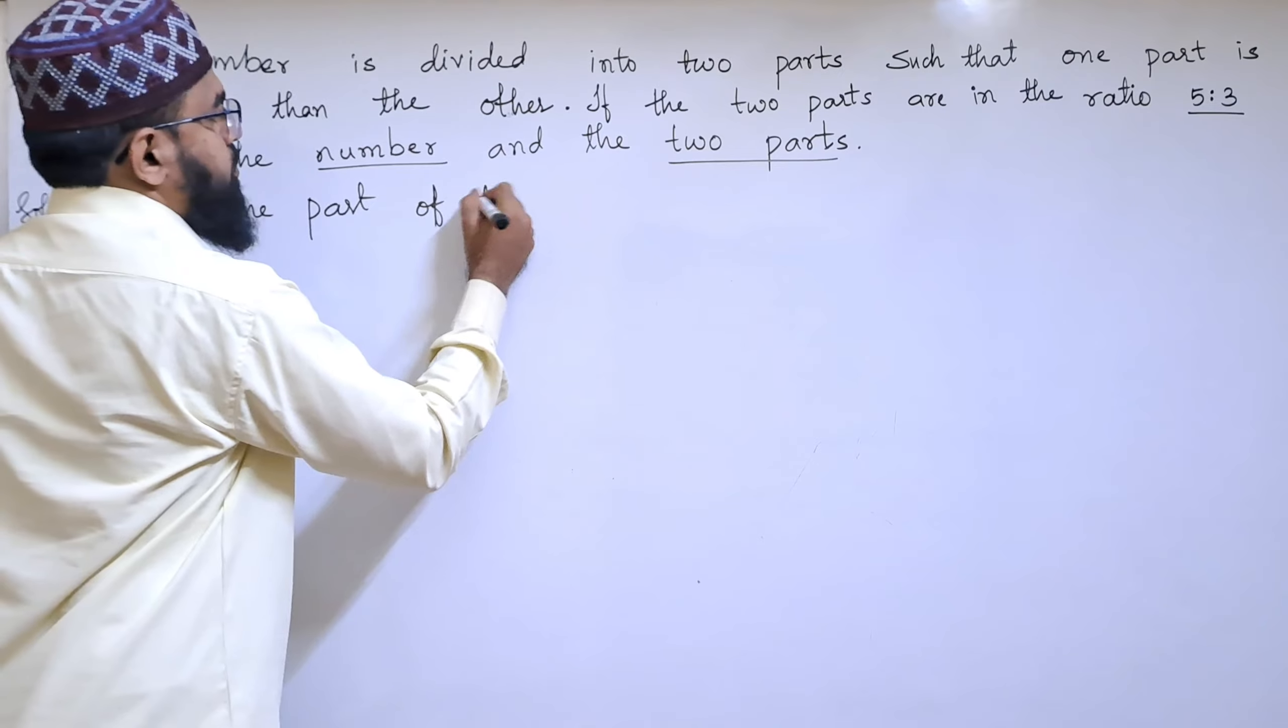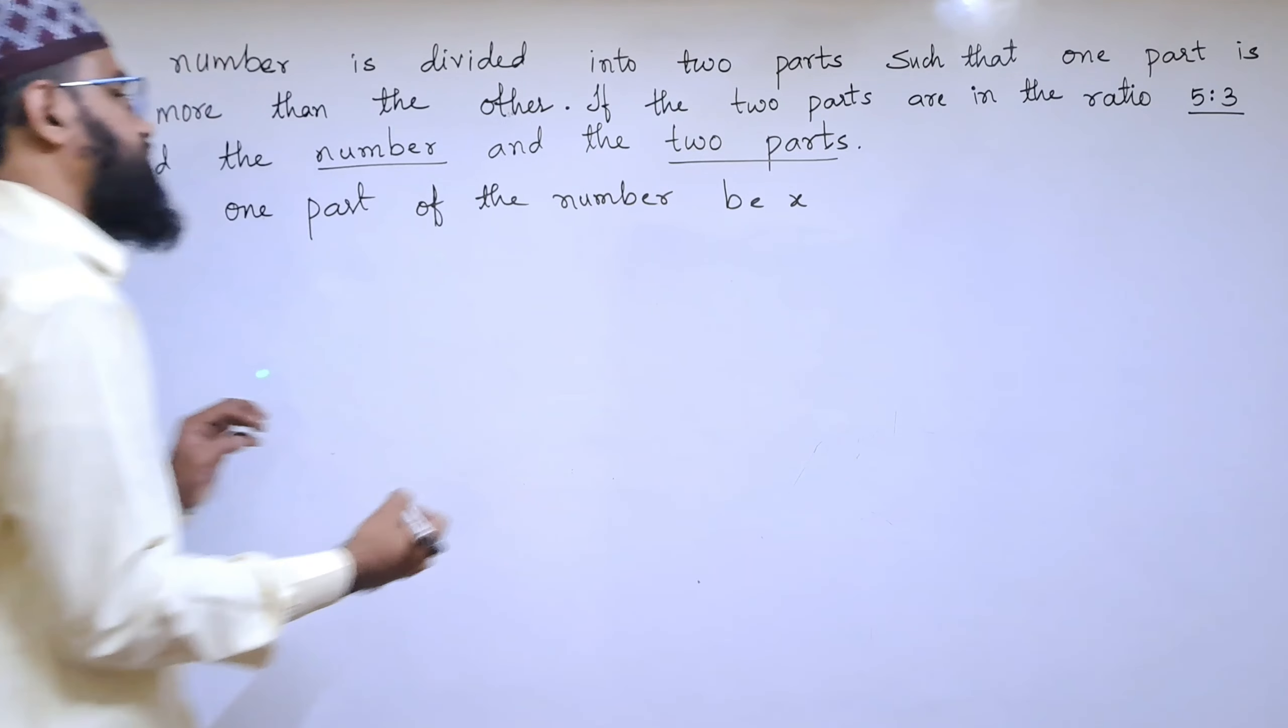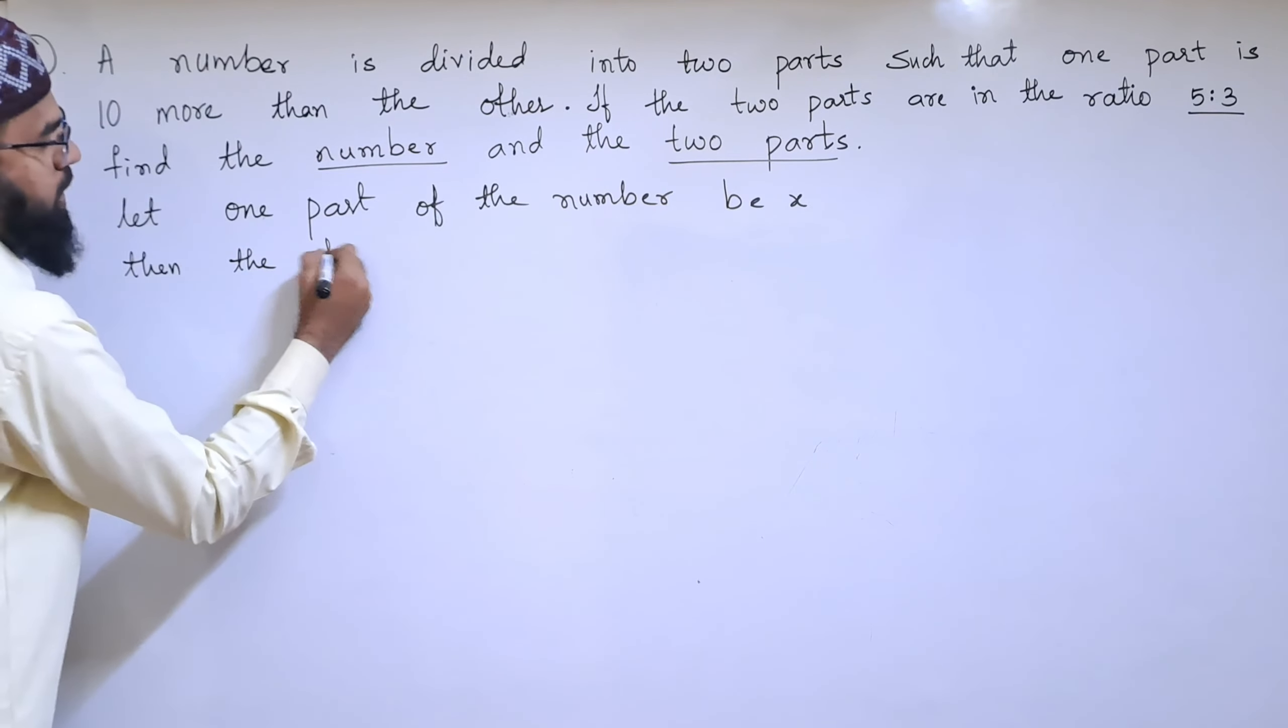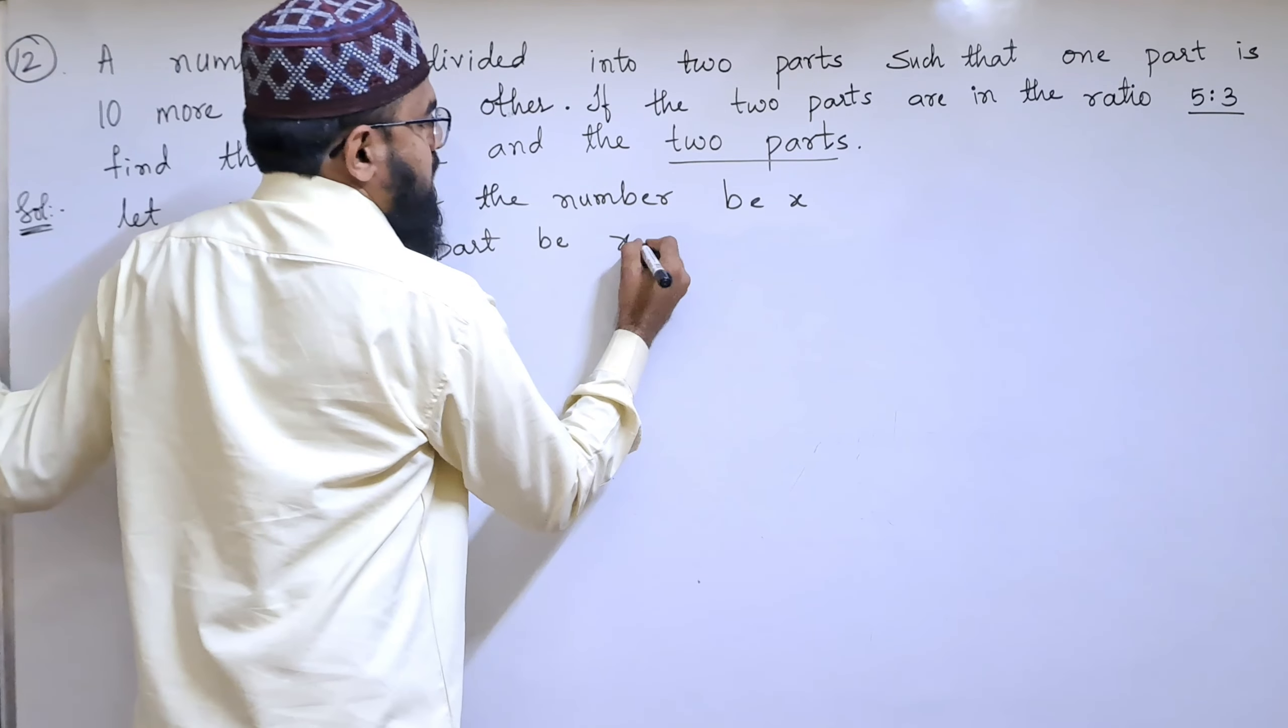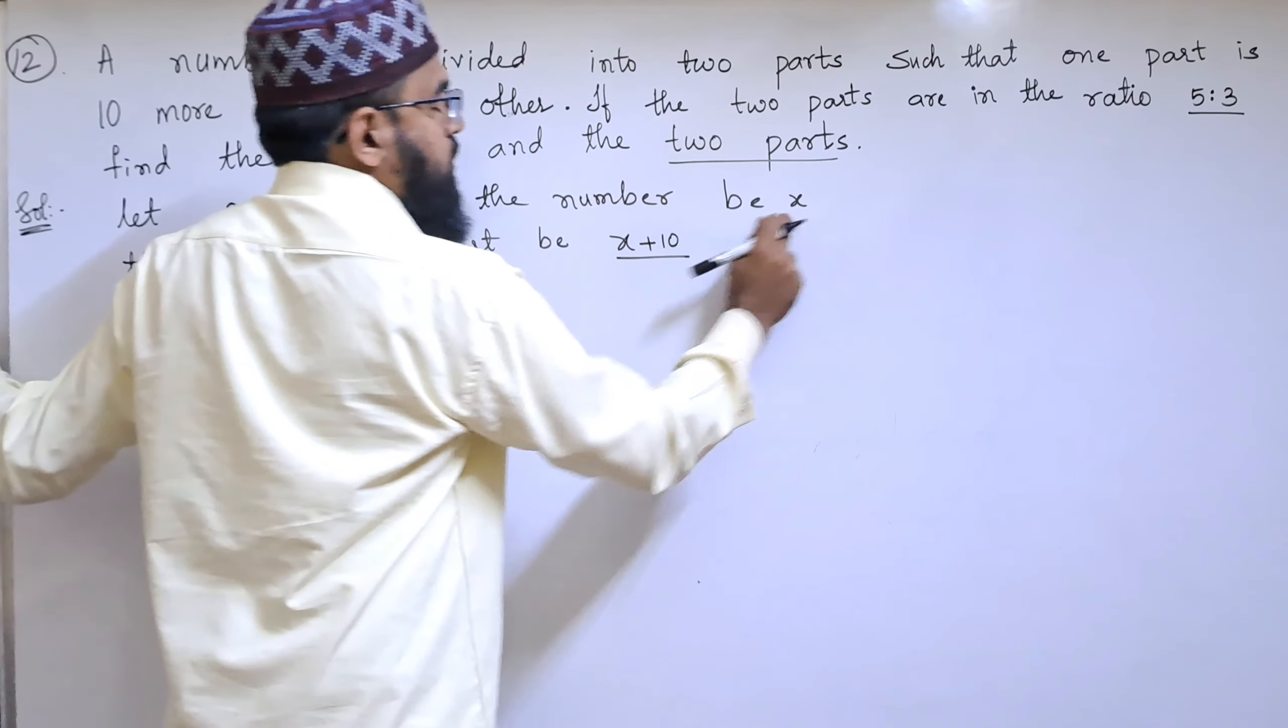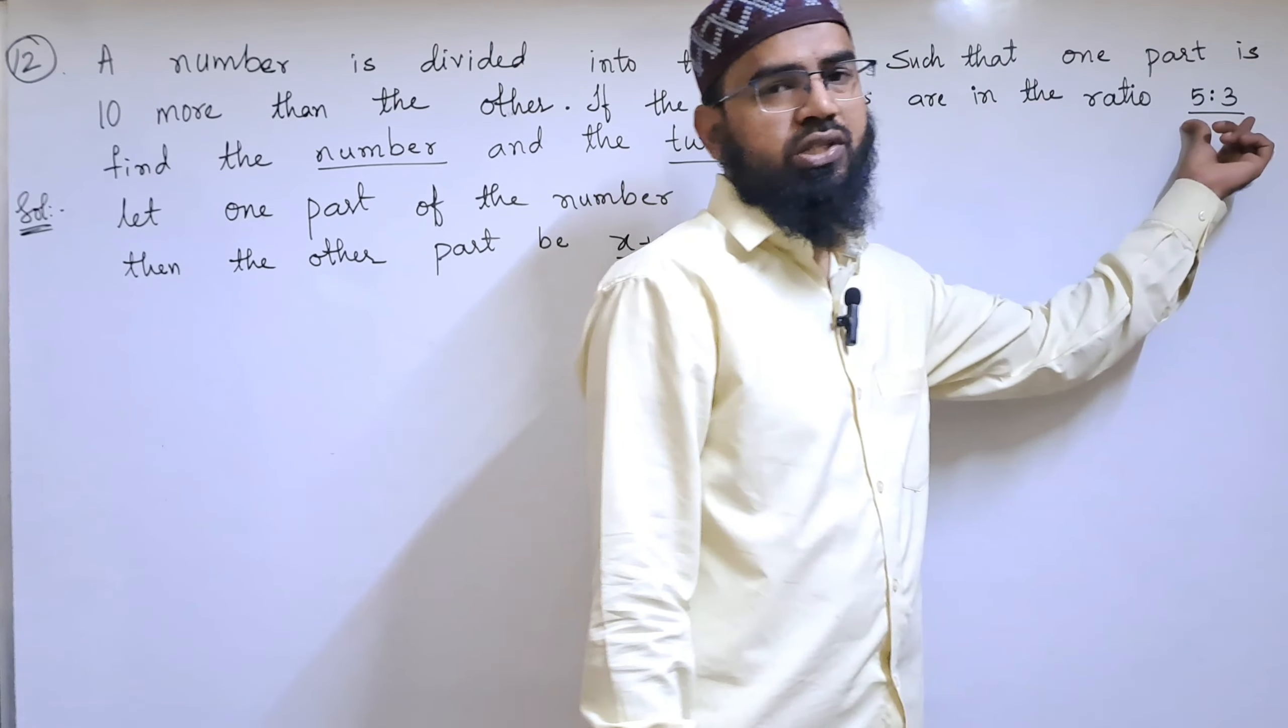Then the other part will be x plus 10. If we add 10 to this second part, we will get the first part. They have given the ratio as 5:3.